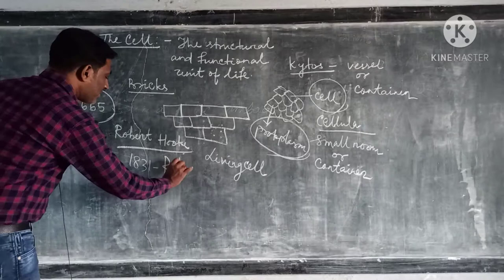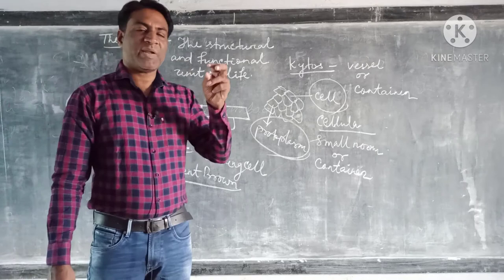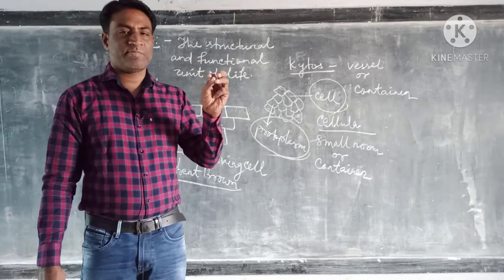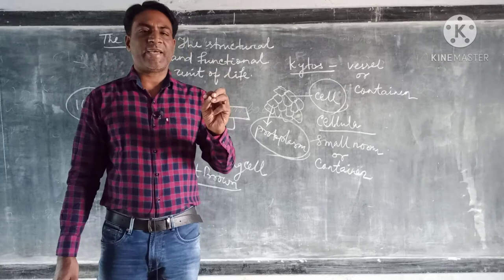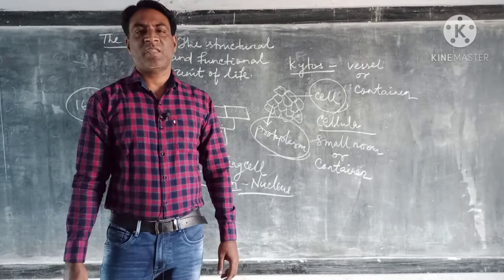Later, in 1831, Robert Brown, another scientist, discovered a spherical mass present inside the cell. It is located in the central region, in the central part of the cell, and that spherical object is called nucleus. So we can say Robert Brown discovered nucleus.